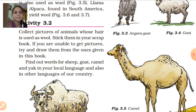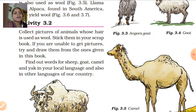So for activity 3.2, you have to collect pictures of animals whose hair is used as wool, stick them, and also find the names of these animals in other languages of our country or in your local language. You can also draw pictures from the book.